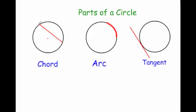A chord is a line which joins one side of a circle to another side, or any two points on the circle, but it doesn't pass through the center. If it passes through the center then it would be the diameter. So a chord is a line which joins any two points of the circle with a straight line — this red line is a chord.